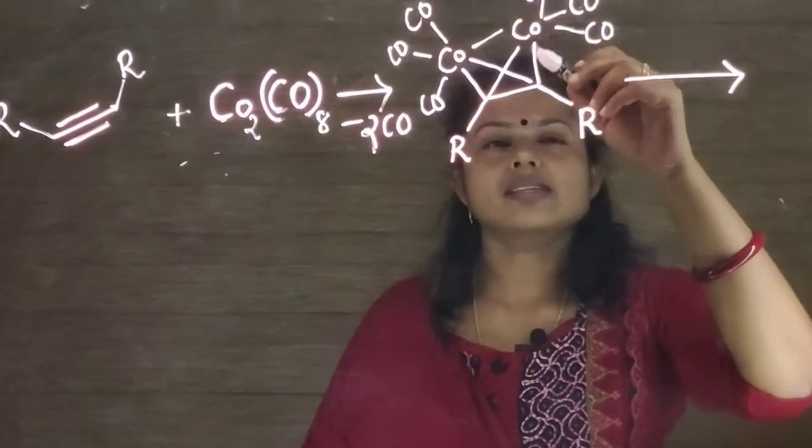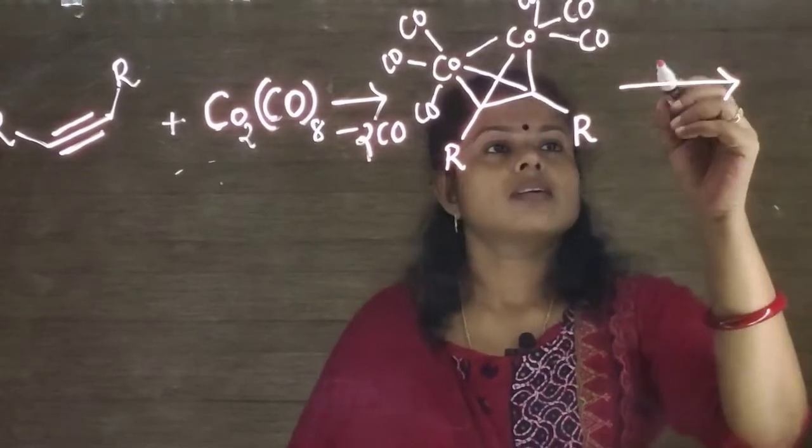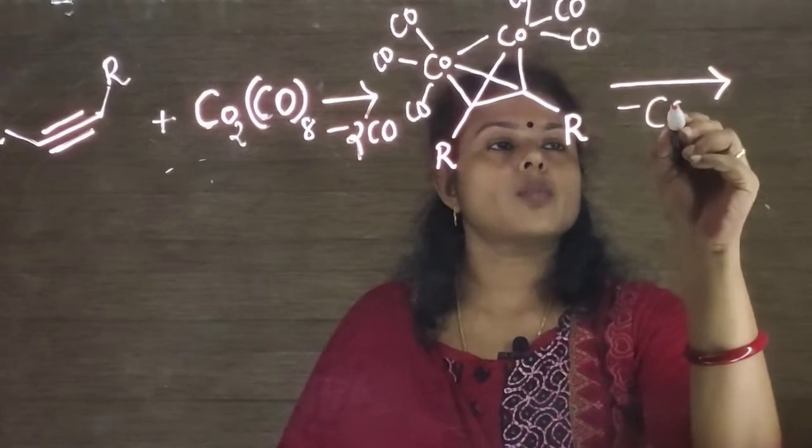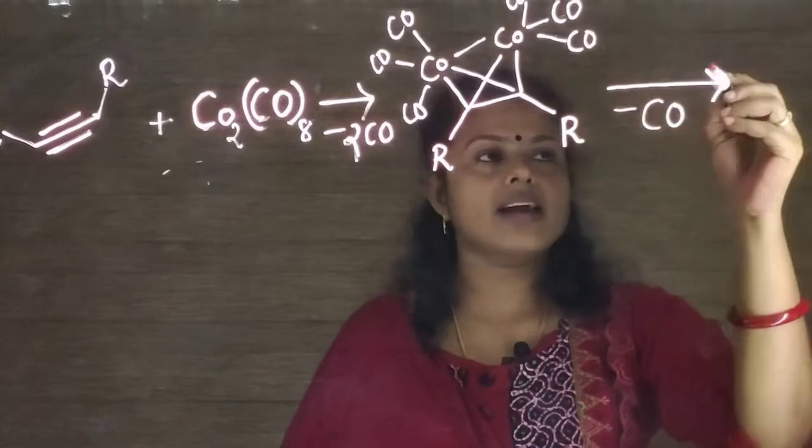Now in this alkyne-cobalt complex, this cobalt is having 18 electrons and in the next step, it loses one molecule of carbon monoxide and a vacant coordination site is created to which an alkene is added.